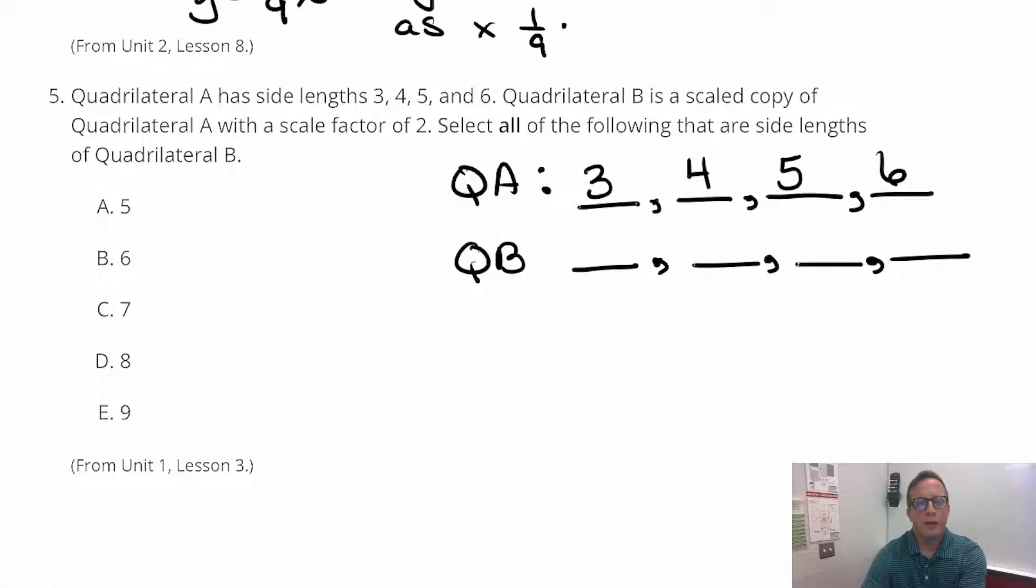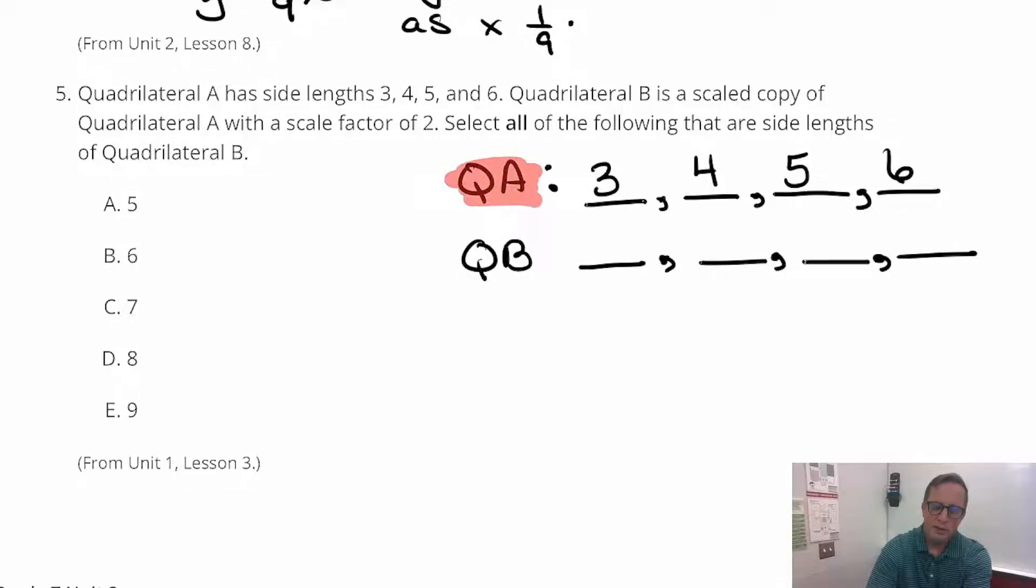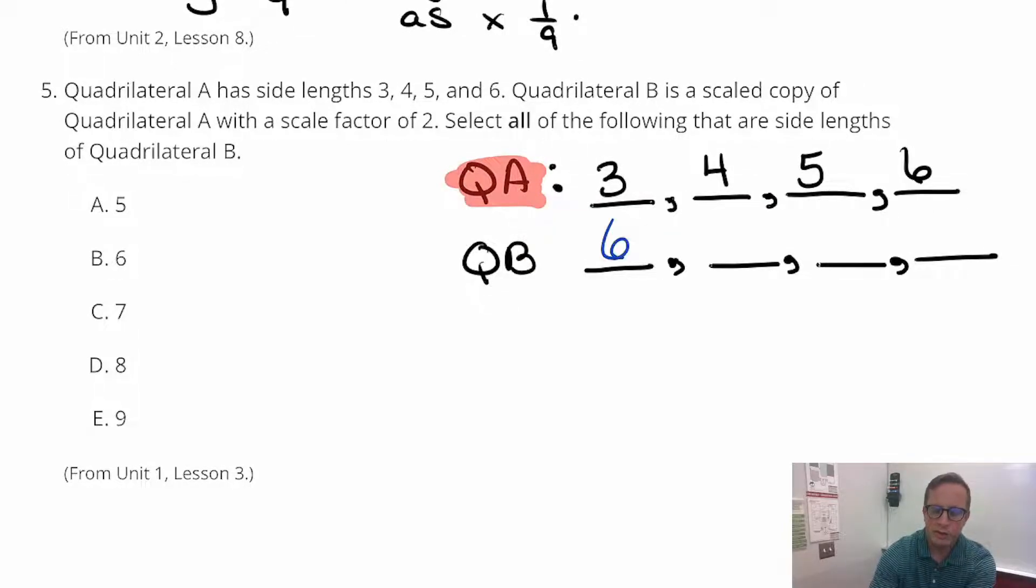Number 5. Quadrilateral A has side lengths 3, 4, 5, and 6. I kind of have quadrilateral A labeled right here. So there's quadrilateral A, QA, 3, 4, 5, and 6. Quadrilateral B is a scaled copy of quadrilateral A with a scale factor of 2. Select all the following that are side lengths of quadrilateral B. Well, if it's a scale factor of 2, that means we're multiplying everything by 2. Multiplying everything by 2. So 3 becomes 6. 4 becomes 8. 5 becomes 10. And 6 becomes 2 billion. No, it doesn't. I always do that. It becomes 12.